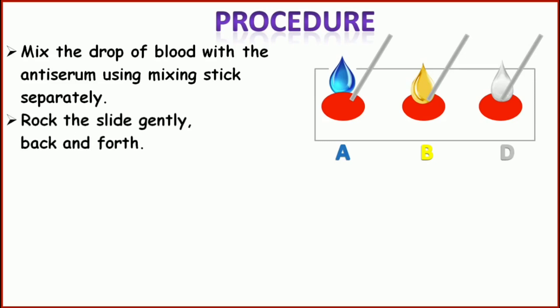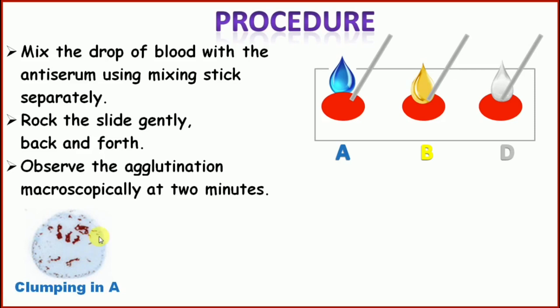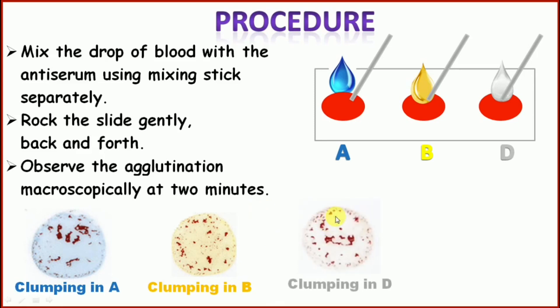After mixing, rock the slide gently with back and forth movement. The final step is to observe agglutination macroscopically at 2 minutes, though the time may vary depending upon the testing kit. If there is agglutination or clumping at marking A, B, or D, it will show a visible clumped pattern. If there is no clumping or agglutination, the drop will appear smooth.